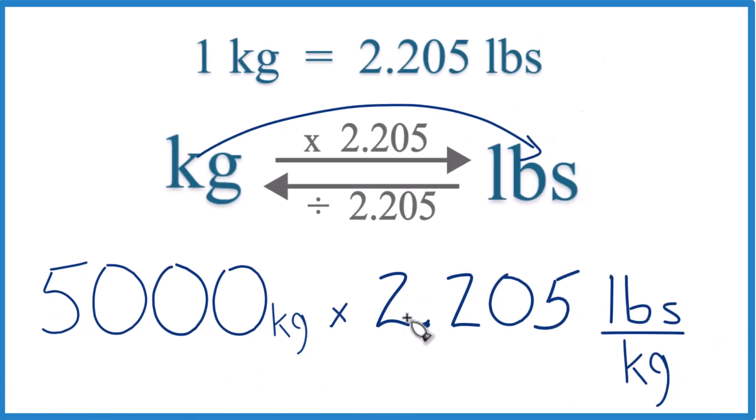Note that it's 2.205 pounds per kilogram. That's from the conversion factor up here. Because this way, when we multiply, kilograms on the top and the bottom cancel out, so you're left with pounds. You know you did it right.